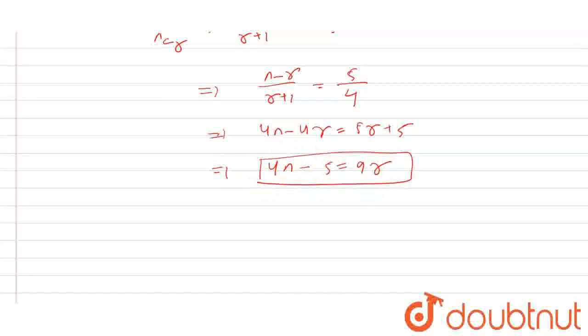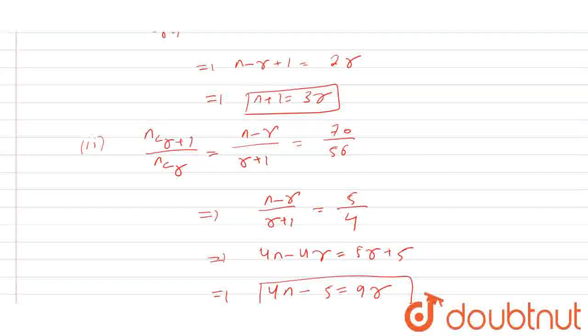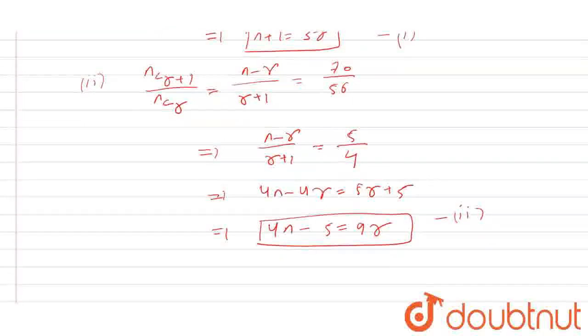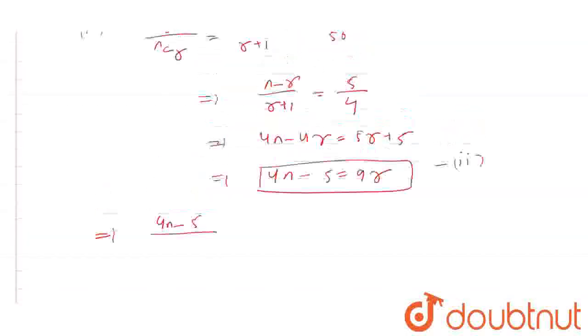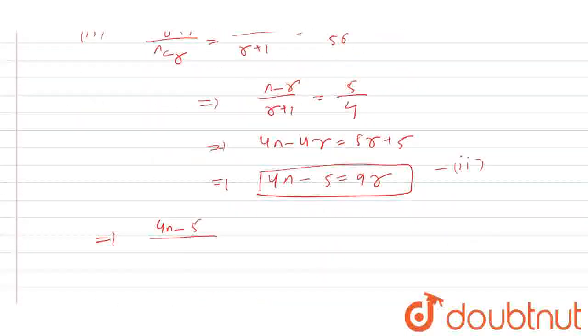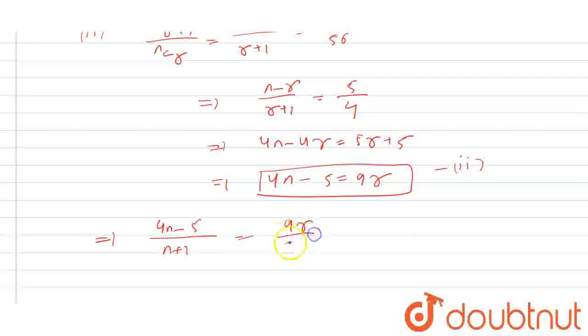Now, we need to solve this equation and this equation. Let this be first, this be the second. So dividing both equations, we get (4n-5) / (n+1) = 9r / 3r.